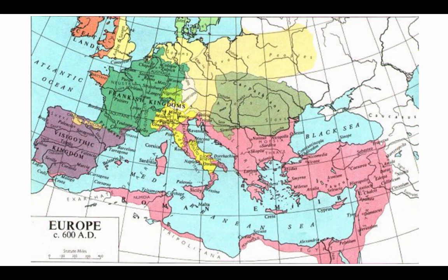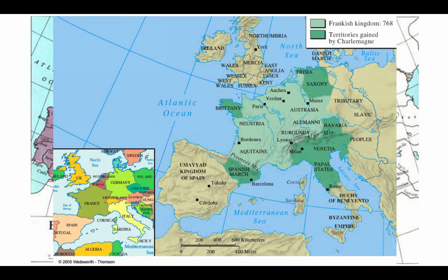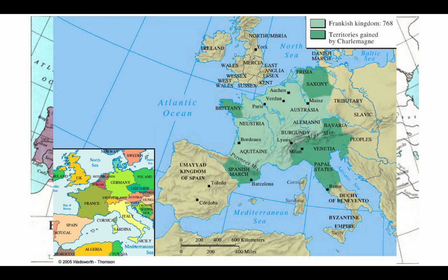We have one moment of centralization within the medieval period, and that is the Frankish kingdom under Charlemagne, shown here in light green, then expanded under Charlemagne into darker green territories taken into his empire. This is our one empire of centralization in this time period, which falls under the Carolingian empire from roughly 700 through 900 CE.